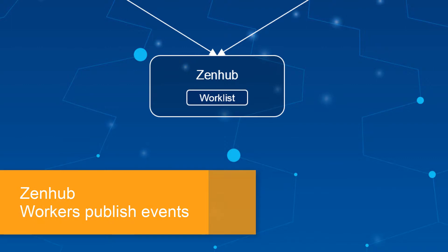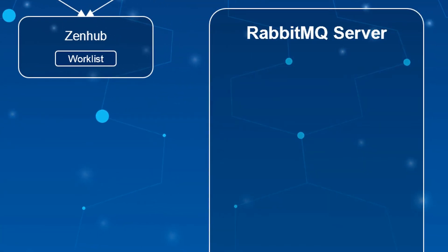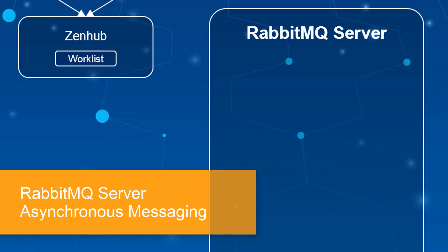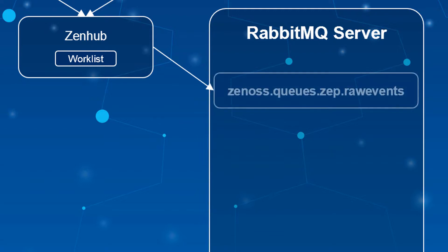A ZenHub worker is then responsible for executing a SendEvents task against these events, publishing them to a message queue. Message queuing in Resource Manager is handled by an instance of the RabbitMQ server. These message queues allow the publishing daemon to hand off messages without waiting for the consuming daemon to be ready to receive them. The first of these queues is named xenos.queues.zep.rawevents, or more commonly, just the RawEvents queue.